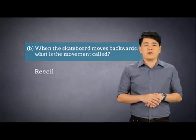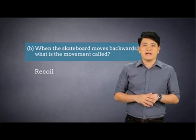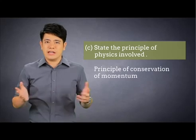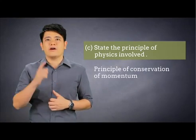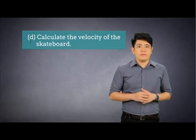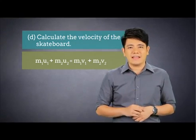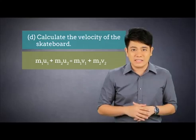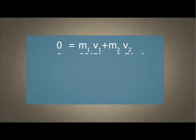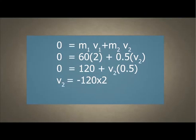For part B, the movement is called recoil — similar to when you fire a gun. For part C, the answer is the principle of conservation of momentum. For part D, using the formula MU plus MU equals MV plus MV, the initial velocity of the boy and the skateboard are both zero because they are stationary, so the left-hand side of the equation is zero. On the right-hand side, substitute M1 with the mass of the boy of 60 kg and V1 with the velocity of 2 meters per second. The negative velocity shows that the skateboard is moving backwards.